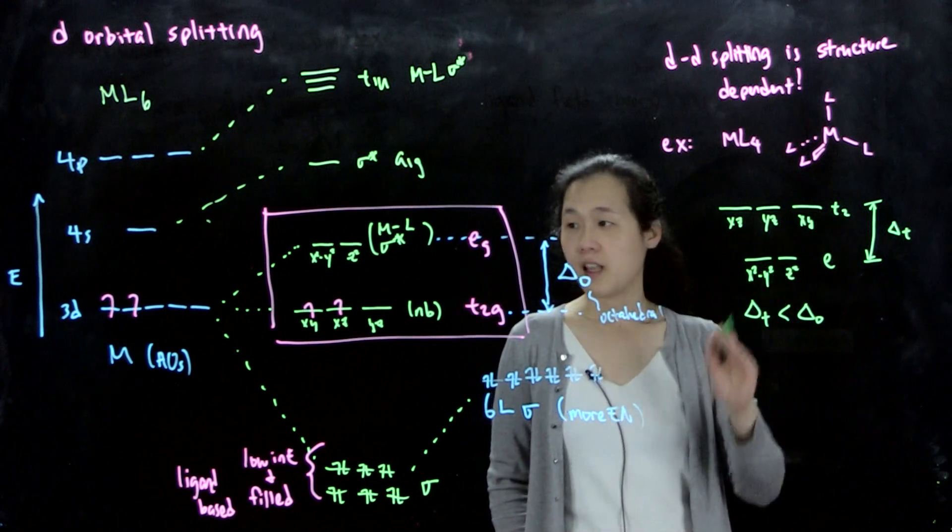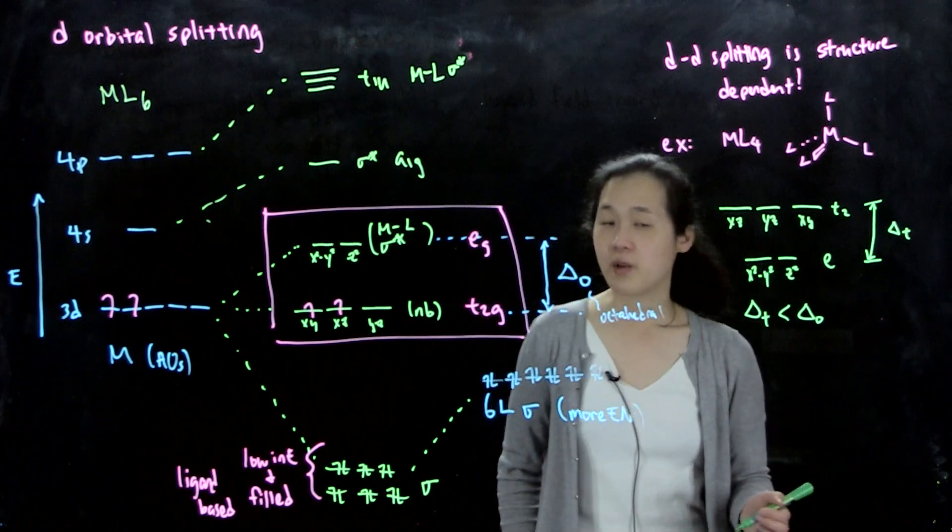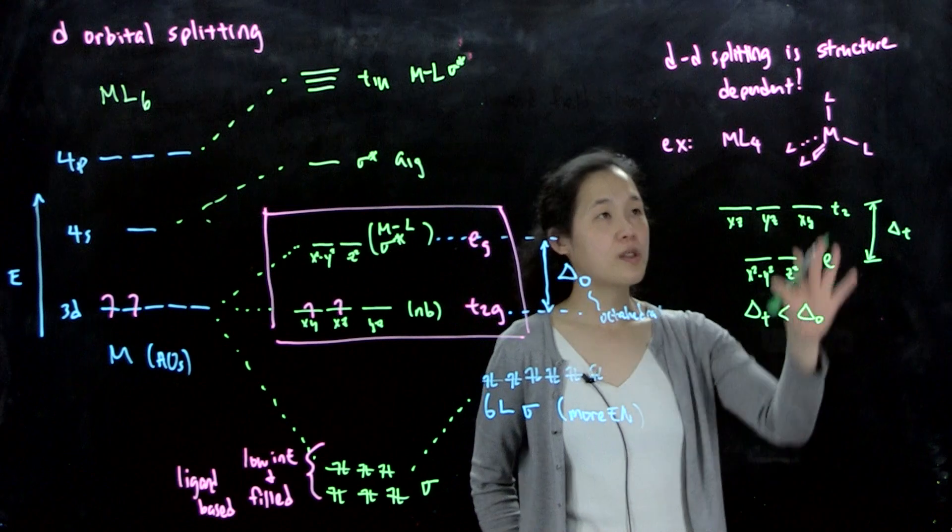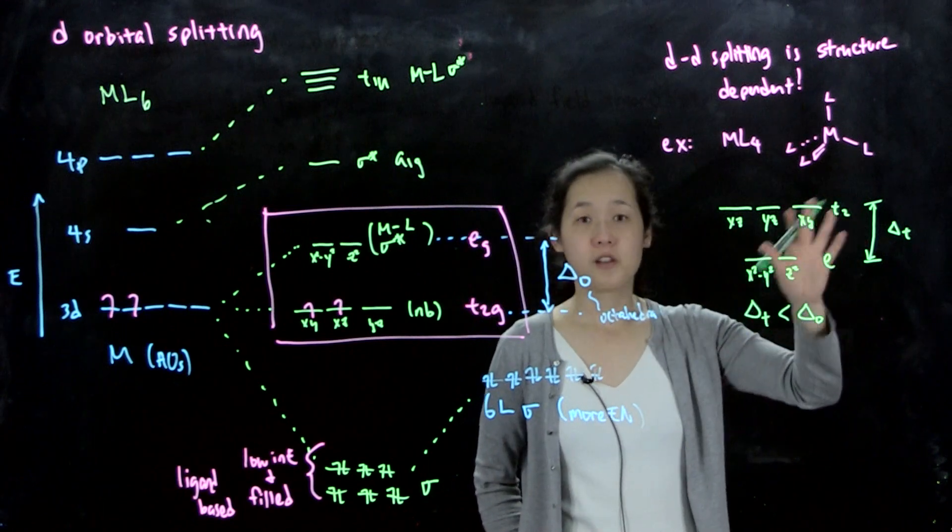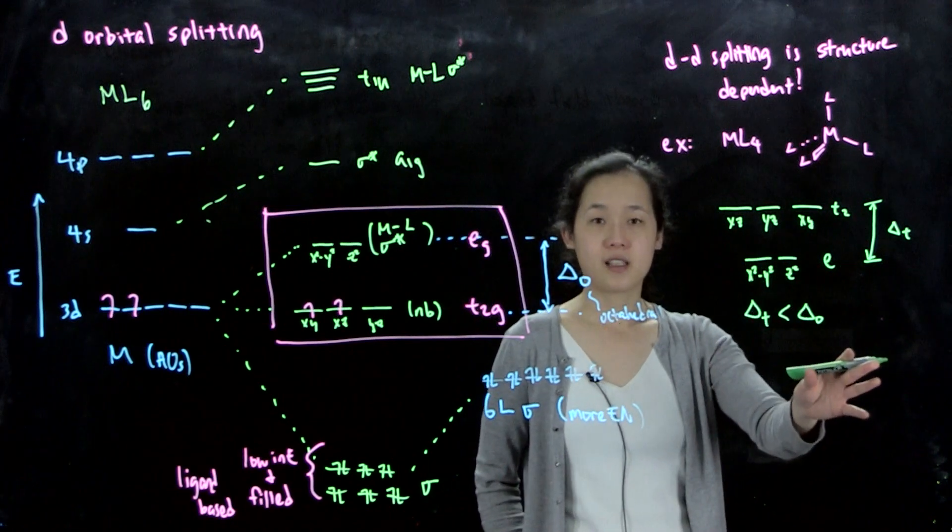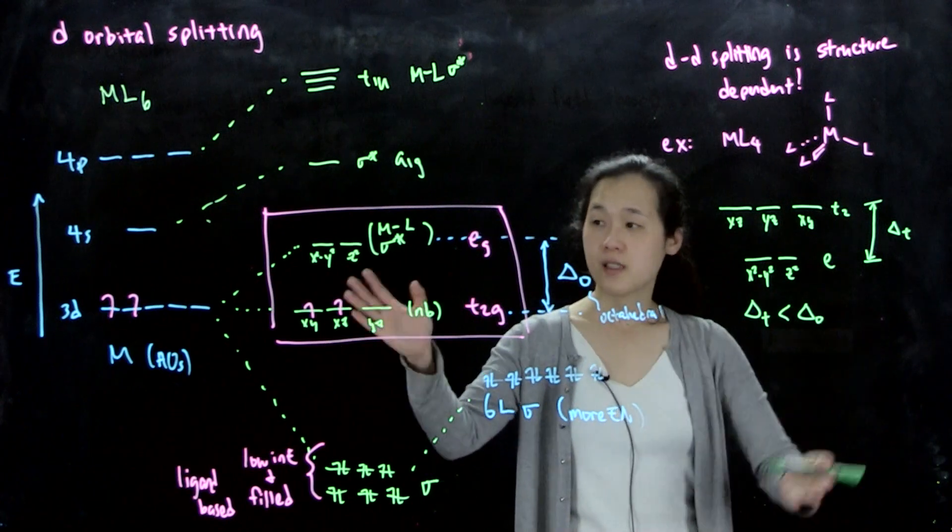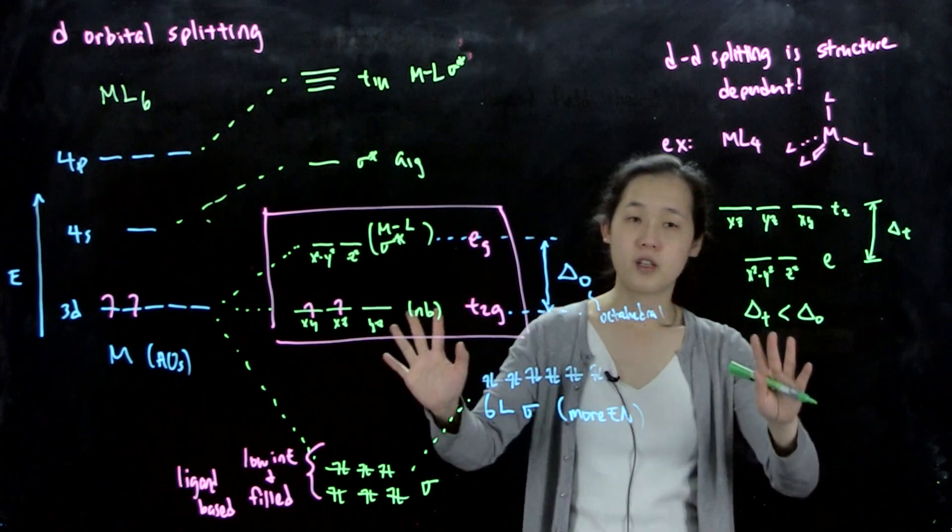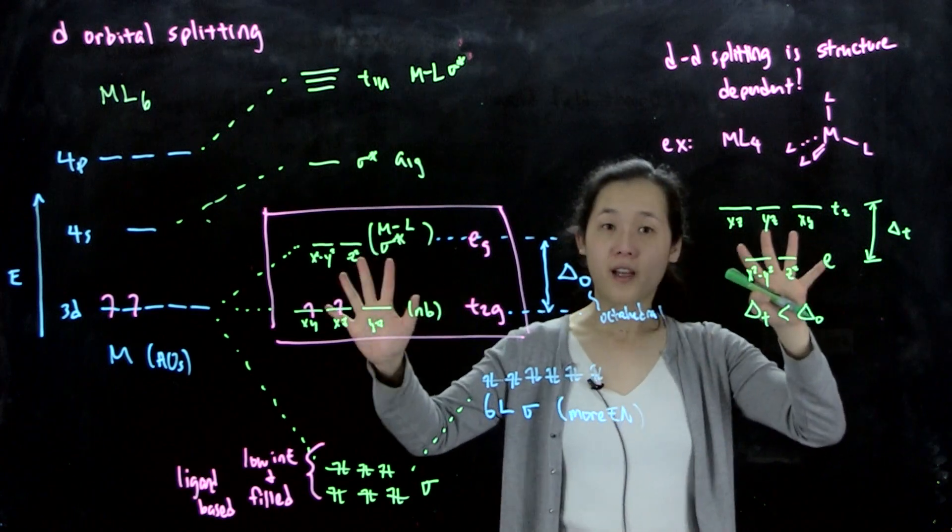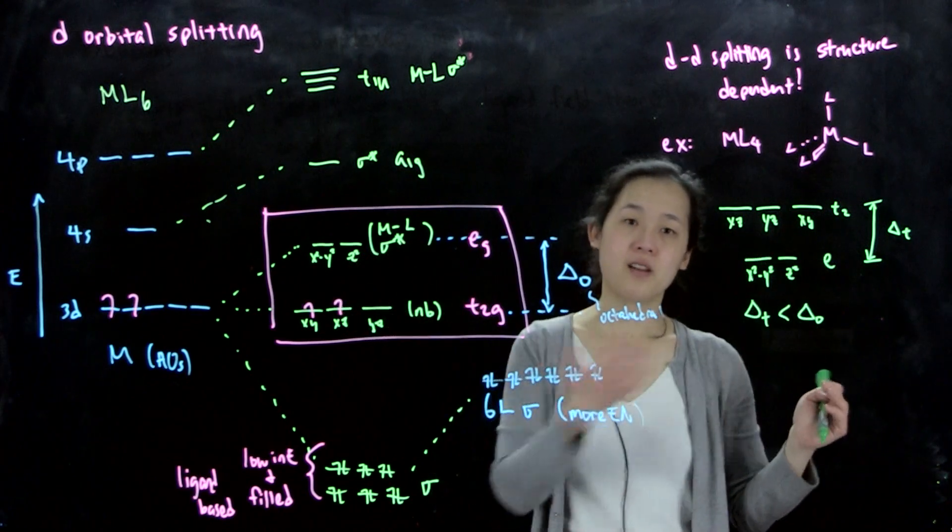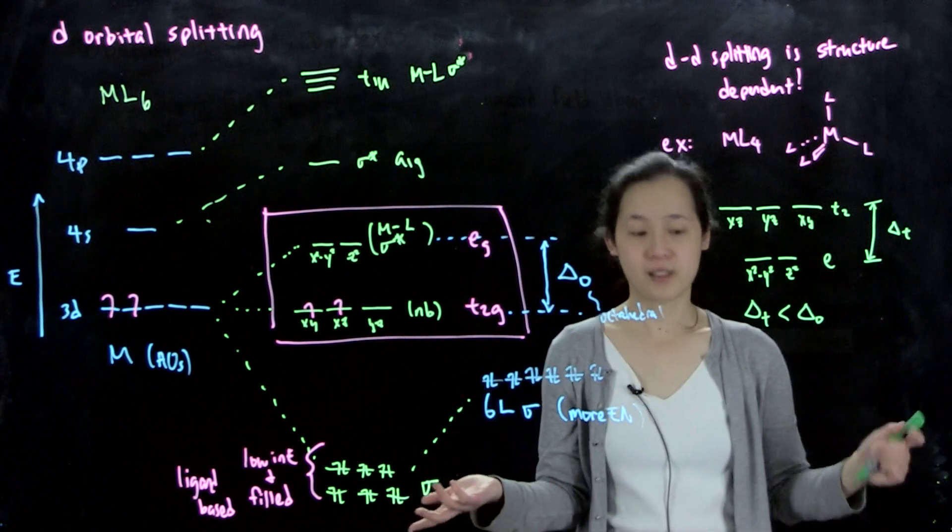If we have square planar, then we can have an even different pattern. We'll do some examples of how to do these types of bonding patterns in class. But these are the two most common ones, octahedral and tetrahedral. You should know what these patterns look like because it's really important for how things end up filling up and the properties of your final complexes.